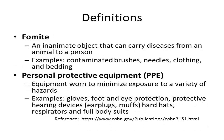A fomite is an inanimate object that can carry pathogenic agents from an animal to a person. Examples of fomites include contaminated brushes, needles, clothing, and bedding like straw or shavings. Fomites contaminated with a disease agent can transmit disease through direct contact with a person.